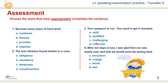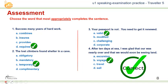You need to get it renewed. Number four: After 10 days at sea, I was glad that our journey was nearly over and that we would soon be seeing land — options: excursion, voyage, travel, sail. The right options: number one — requires; number two — temporary; number three — valid; number four — voyage.